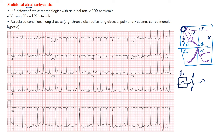Remember, atrial depolarization represents our P-wave. So if you have three different areas firing, you can imagine three different P-wave morphologies — one may look like this, one like that, each with different shapes. The criteria for MAT is met when you have at least three different morphologies and an atrial rate over 100 beats per minute.